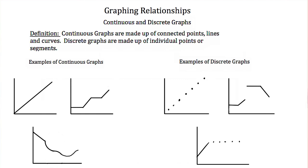So let's look at the examples. A continuous graph can be made up of one segment, or several segments, as long as they are always connected. They don't have to be straight lines, they can be curved, or a combination of curved and straight lines. But as long as they are all connected, it is a continuous graph.